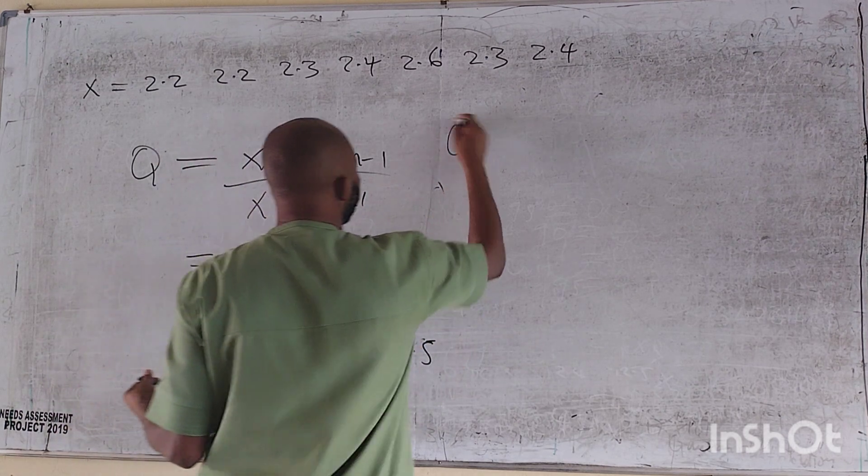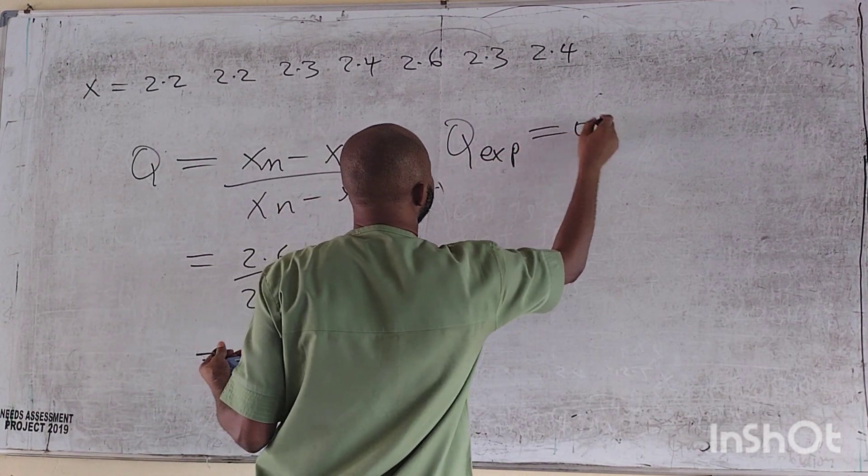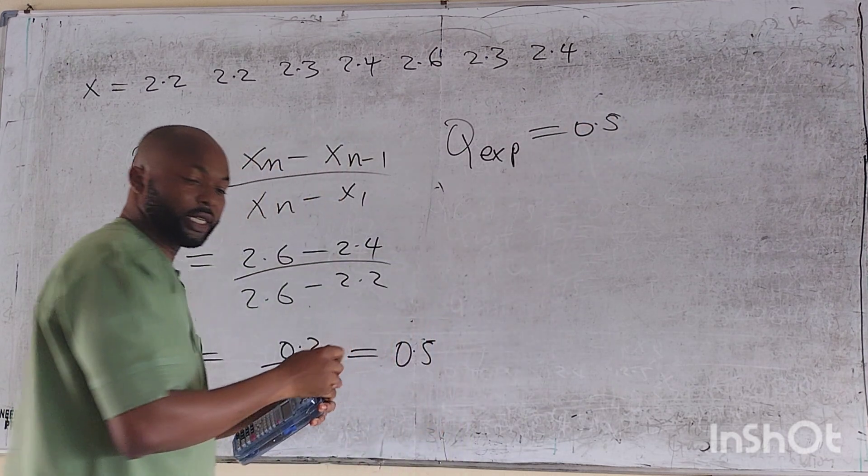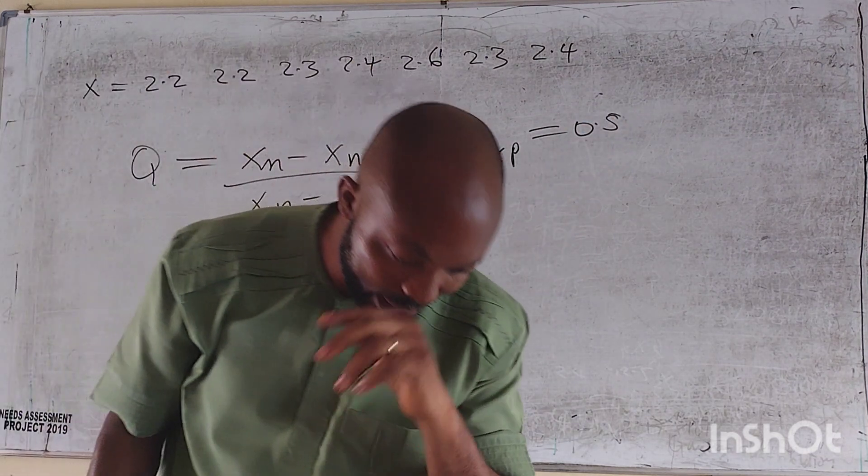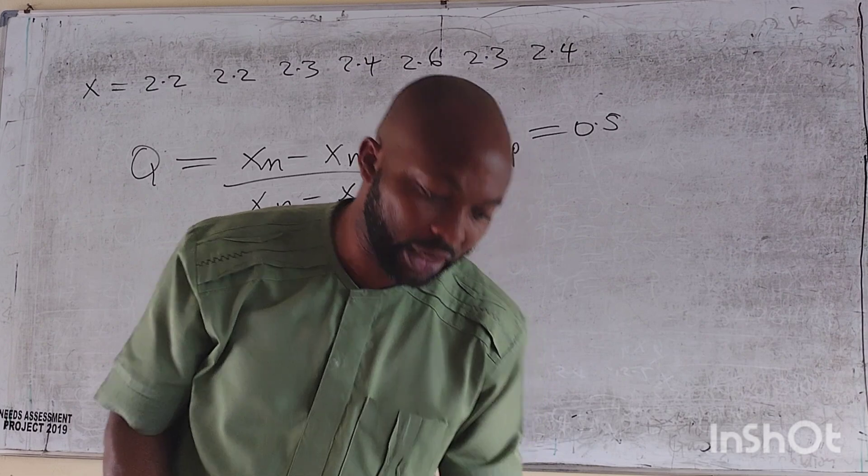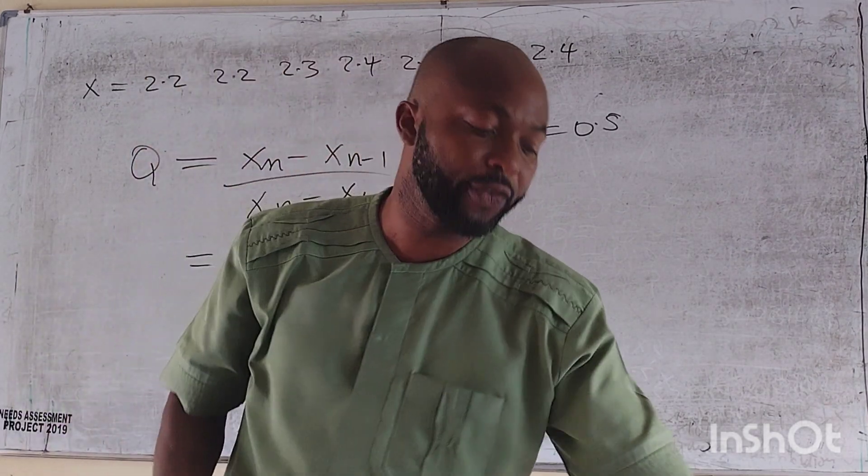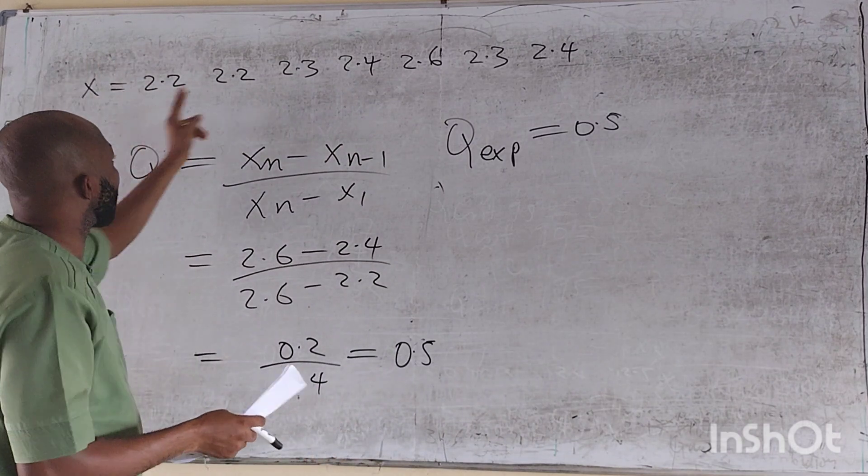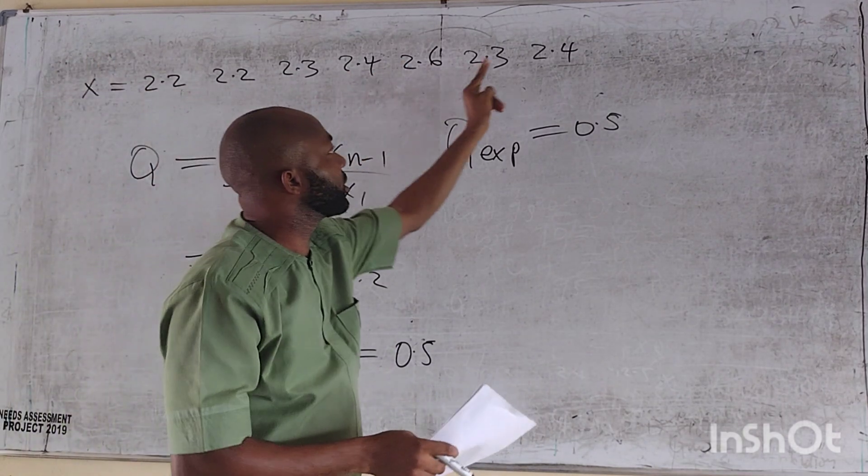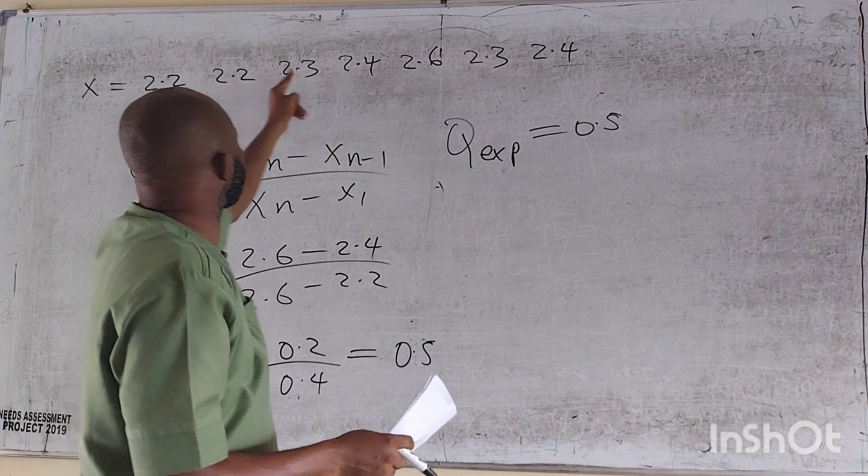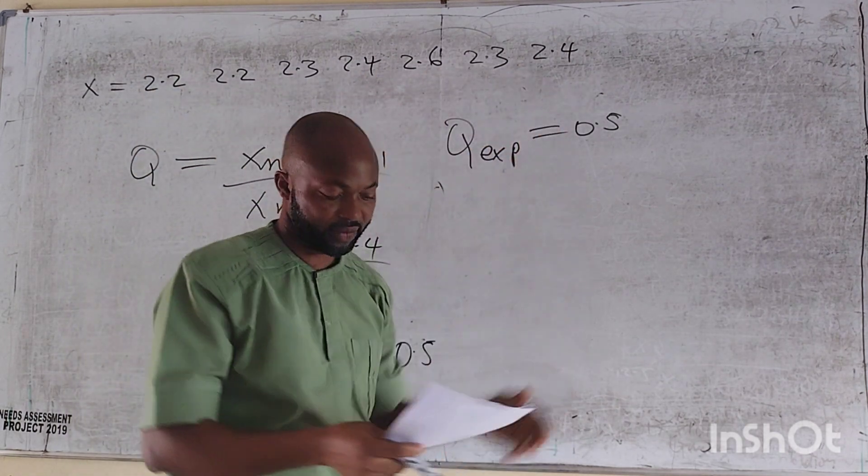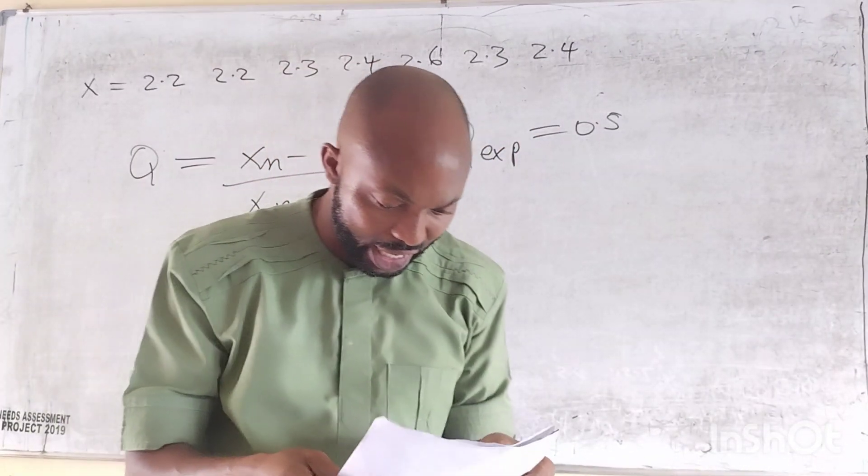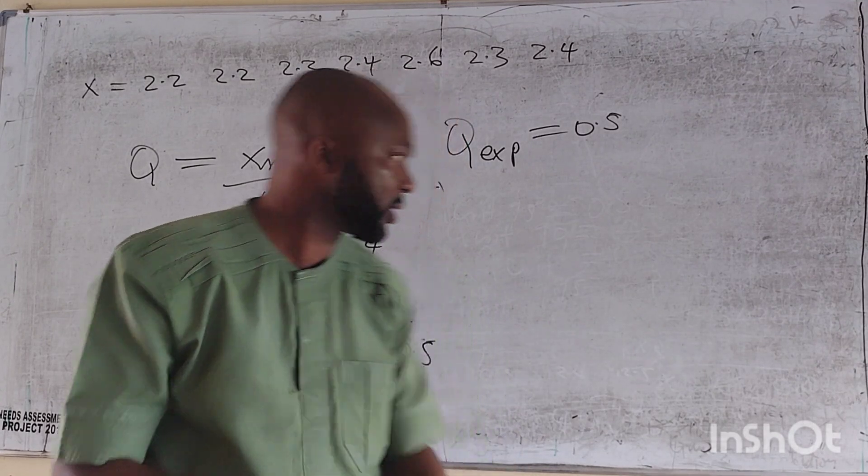So 2.6 minus 2.4 is 0.2. Now 2.6 minus 2.2 is 0.4. And this is 0.2 divided by 0.4 is 0.5. So Q-experiment is equal to 0.5. Let's see from the question, at what interval? 95% confidence interval. So at 95%, we check over here. How many variables do we have? 1, 2, 3, 4, 5, 6, 7. Come to 7 at 95, 0.568.